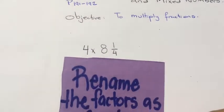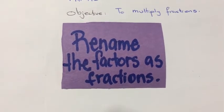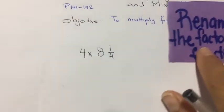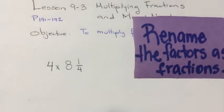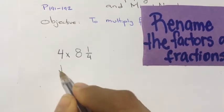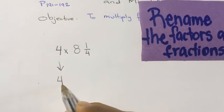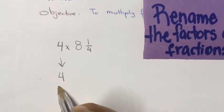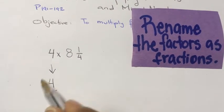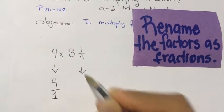The first thing we have to do is rename the factors as fractions. We need to rename this whole number as a fraction. When you have a whole number, all you need to add is a 1 as a denominator. Now we have a fraction.